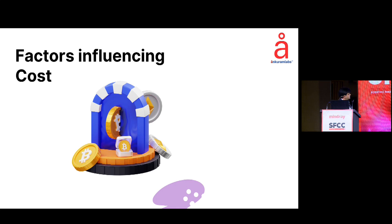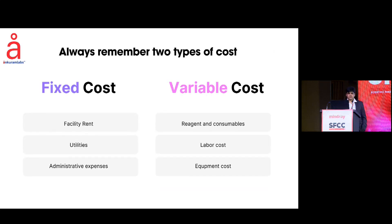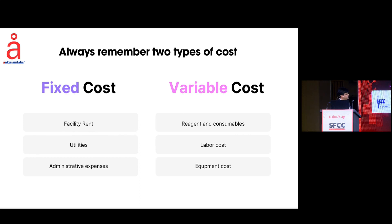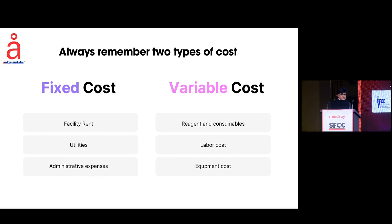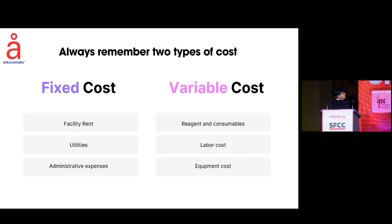So what are the factors which influence the cost? It is very simple — there are just two things. The fixed cost and the variable cost. Fixed costs are those which are fixed regardless of whether you run the lab or go on holiday and run no tests — they will always occur. These include facility rent, utilities like electricity bill, BMW charges, software charges, and administrative expenses. Then there are variable costs like reagents and consumables, which occur only when you run the test. There are also some hidden costs you should always factor in, like recheck and reagent expiry.